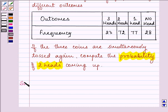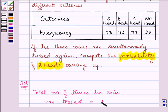Let us proceed on with our solution. Here the total number of times the coin was tossed is equal to 200.